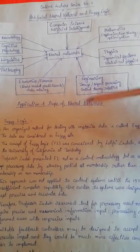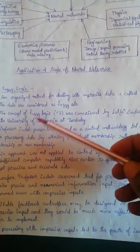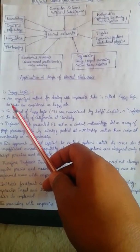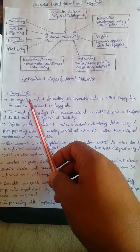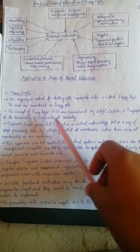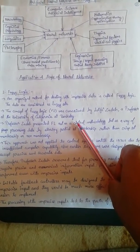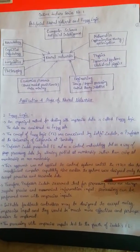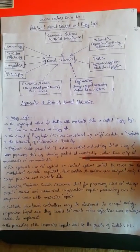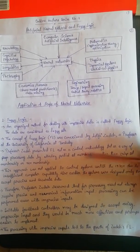We'll discuss ANN later in detail. Now let's look at fuzzy logic. Fuzzy logic is nothing but a concept dealing with data that is not accurate. So if you have inaccurate data sets, then you can use a fuzzy logic system.